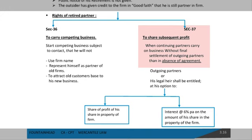Second, Section 37 — right to share subsequent profit. This means you are not allowed to do competing business when continuing partners carry on business without final settlement of the outgoing partner's dues, in absence of agreement.